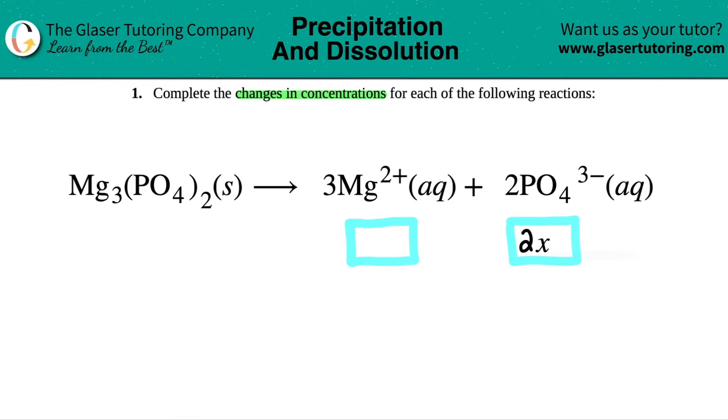Now, the reason why I know this is because whenever you're trying to find the changes in concentrations, you always look for the mole ratio, the coefficients. The coefficients are always coming from the big numbers in front of your balanced equation, right? So there's three Mg²⁺ for every two phosphates.